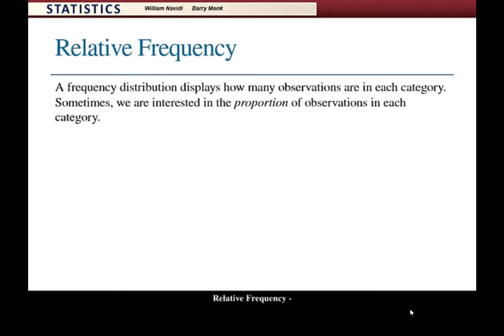A frequency distribution displays how many observations are in each category. Sometimes we are interested in the proportion of observations in each category.